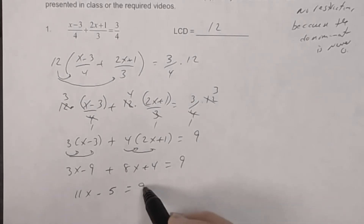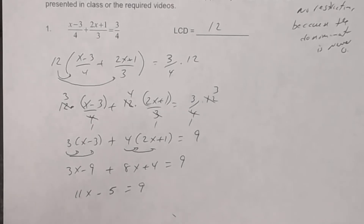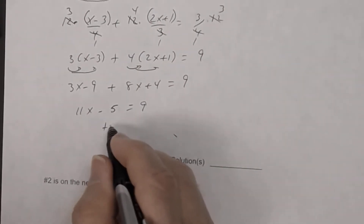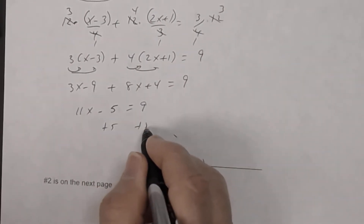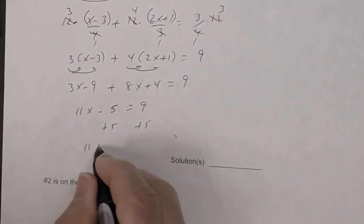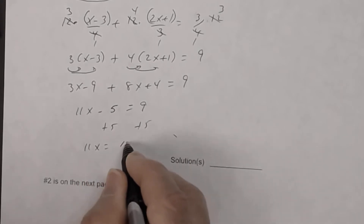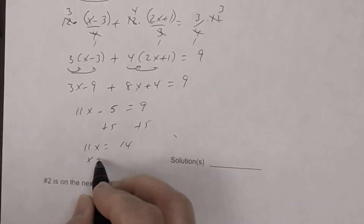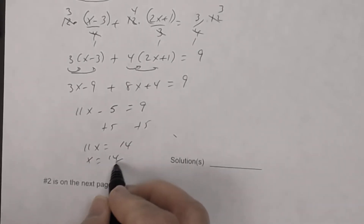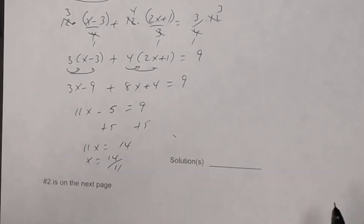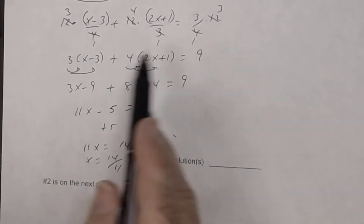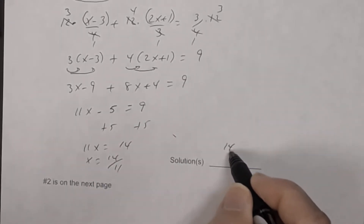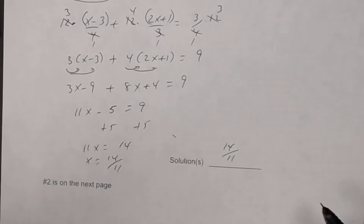Combining like terms: 8x and 3x is 11x, and negative 9 plus positive 4 is negative 5, so 11x minus 5 equals 9. Adding 5 to both sides gives 11x equals 14, so x equals 14 over 11.